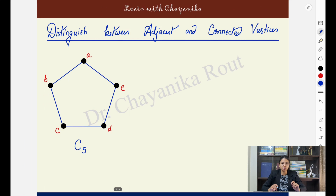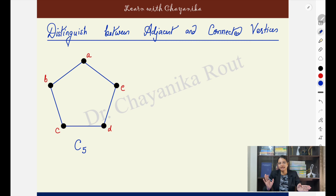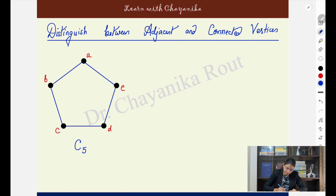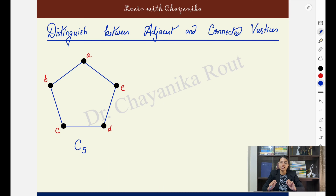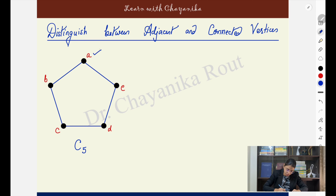Now let's have a brief discussion on the comparison between adjacent vertices and connected vertices, because there is often some confusion between these two concepts. Adjacent vertices are a pair of vertices between which there exists a direct edge. For example, A and E are adjacent vertices because there is a direct edge between them. For vertices to be connected, the presence of a direct edge is not mandatory — you can have a path between those two vertices. If a pair of vertices are adjacent, they are definitely connected also through that direct edge.